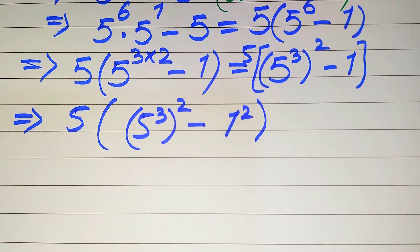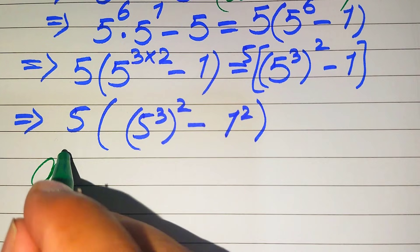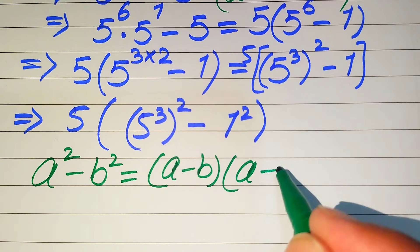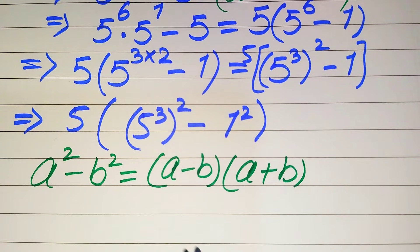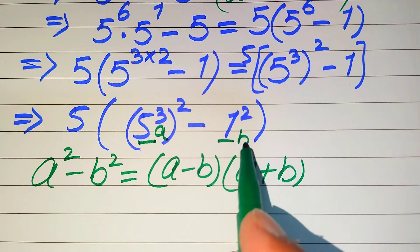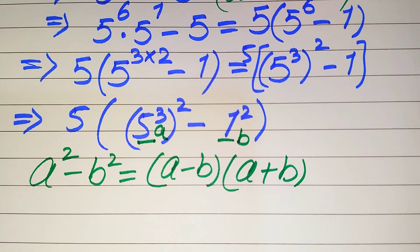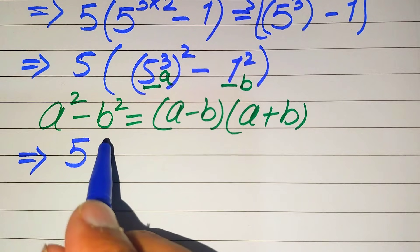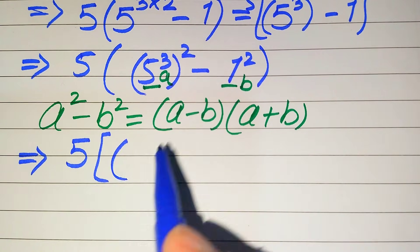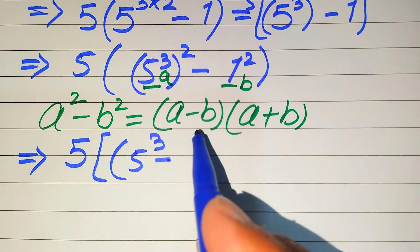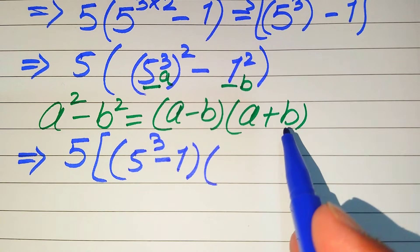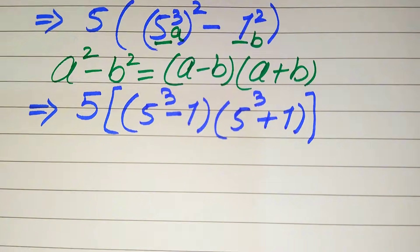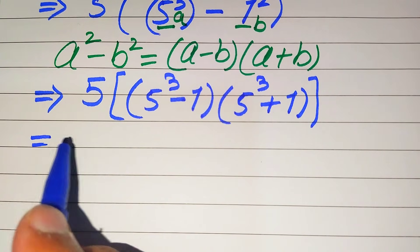In the next step, we use the algebraic formula: a squared minus b squared equals (a minus b)(a plus b). Here the base of the first term is a = 5 cubed, and the base of the second term is b = 1. According to this formula, we write our expression as 5 times (5 cubed minus 1) times (5 cubed plus 1).